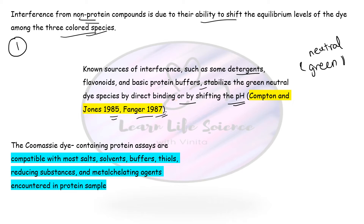On the other hand, the Coomassie dye-based protein assay is compatible with most salts, solvents, buffers, thiols, reducing substances, and metal chelating agents encountered in protein samples. When extracting protein from biological sources, you will use solvents, buffers, and reducing agents — and these are not going to interfere with the Bradford reaction, so you can freely use them for protein extraction.